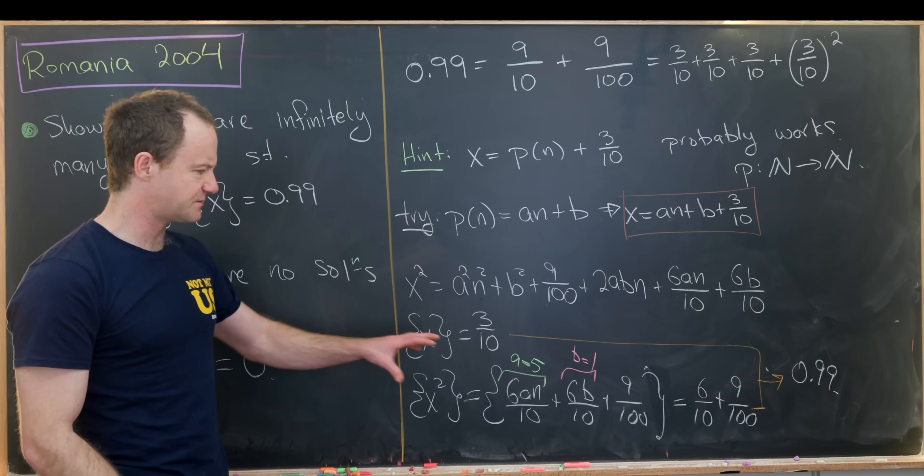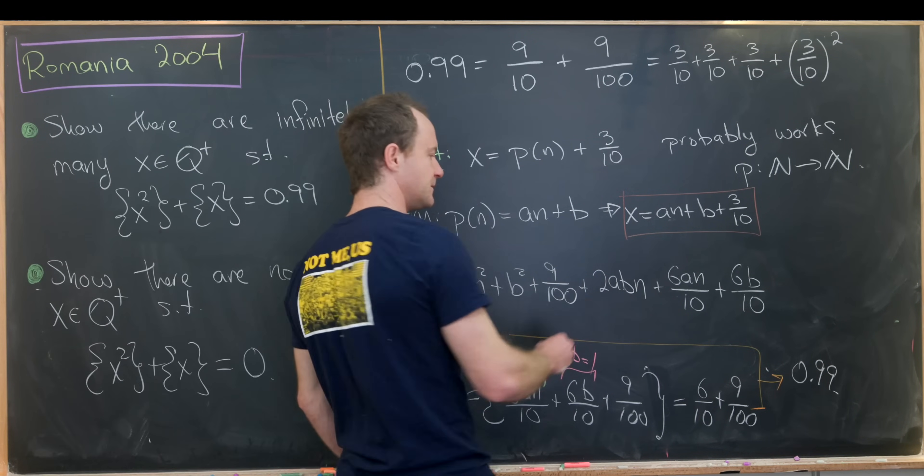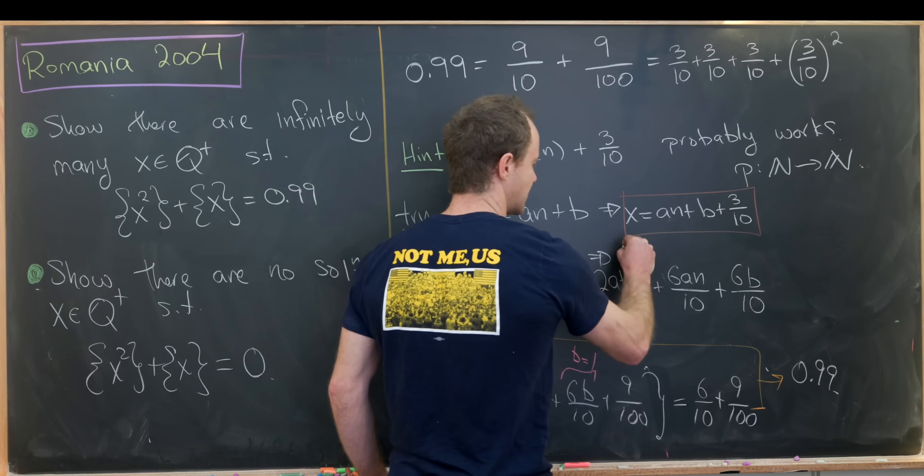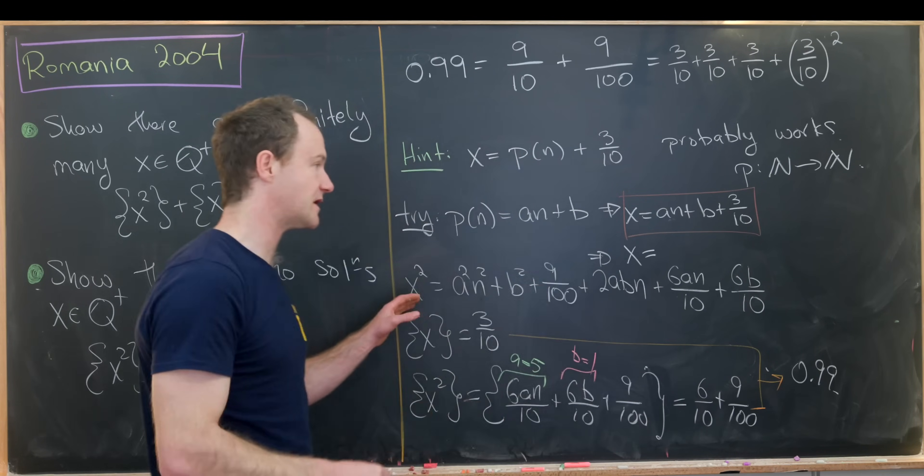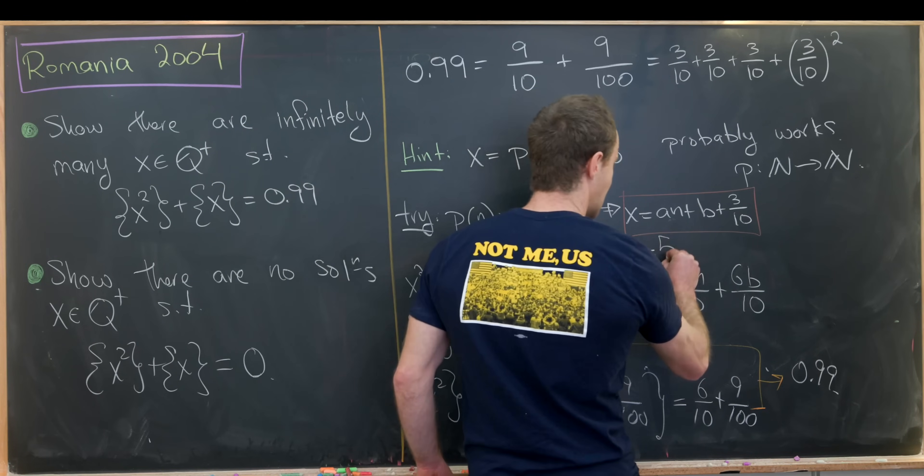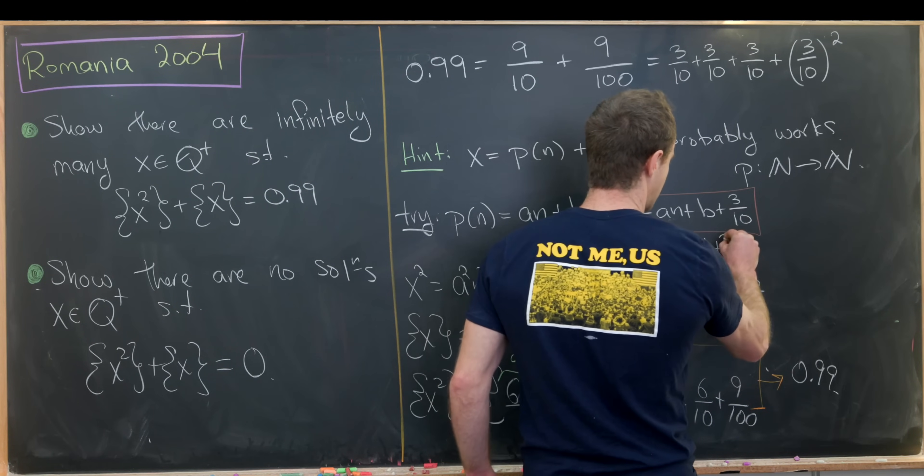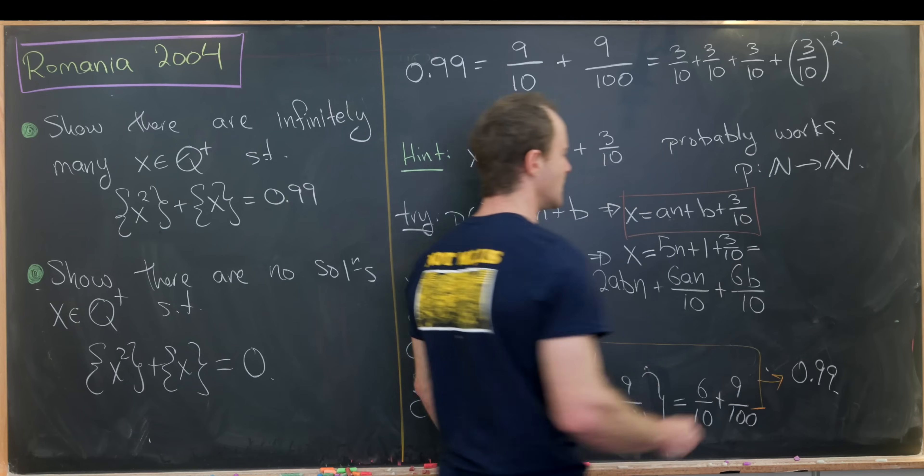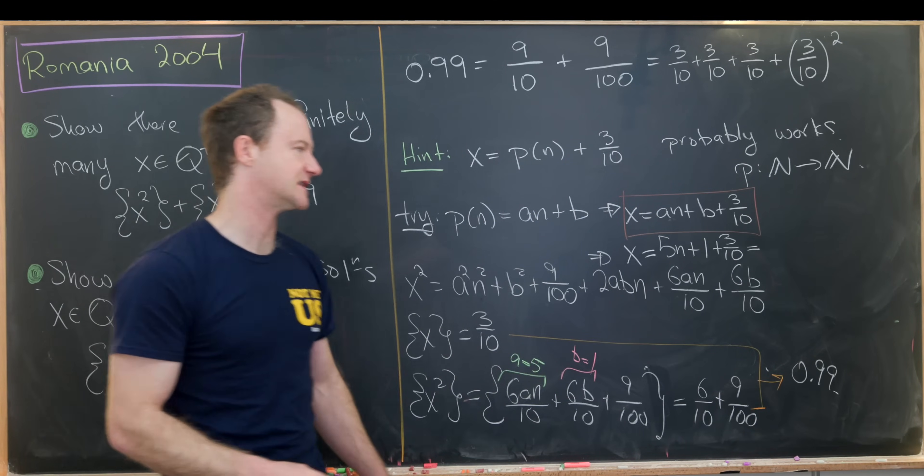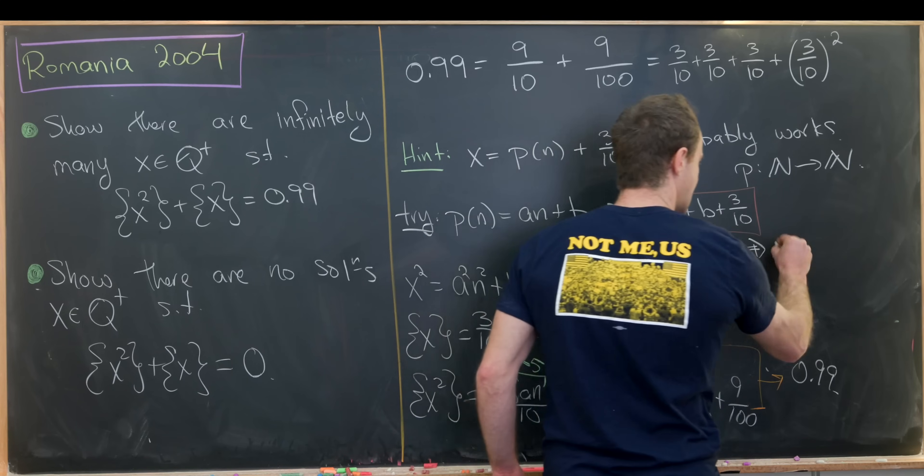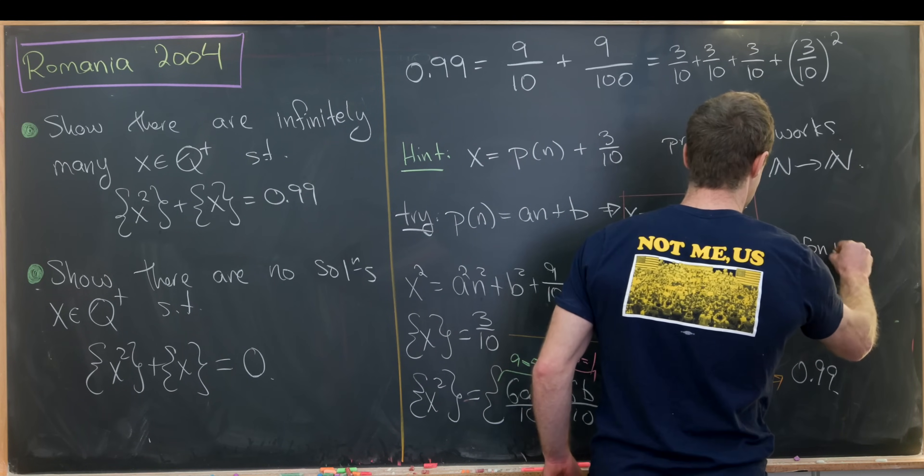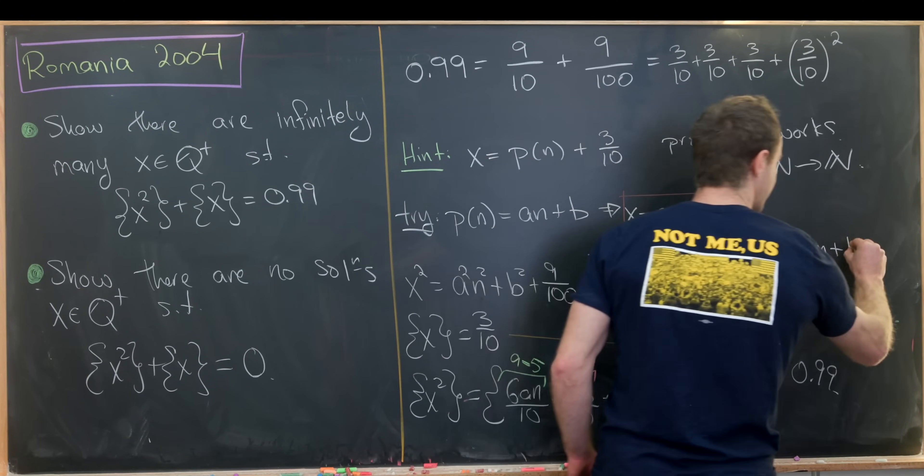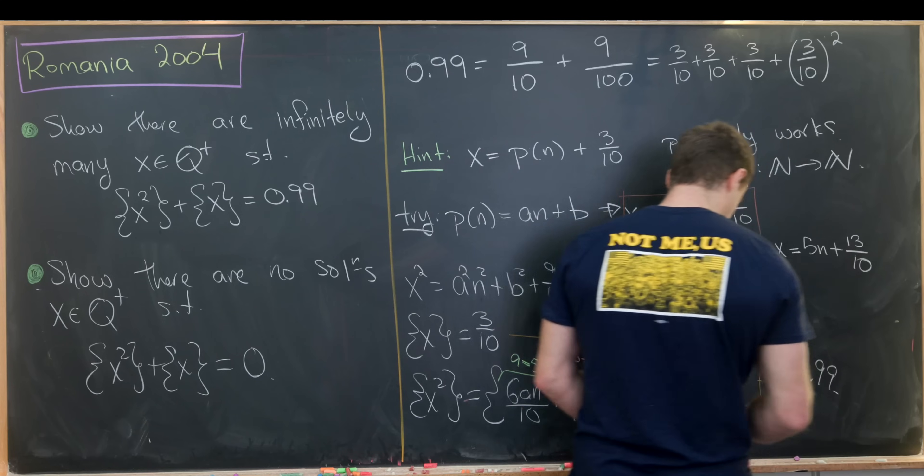Let's put all of this together. So that means we'll summarize that x will be of the form 5n plus 1 plus 3 over 10. Or maybe if you wanted to put some things together, that means that x equals 5n plus 13 over 10.